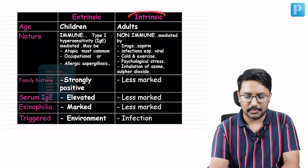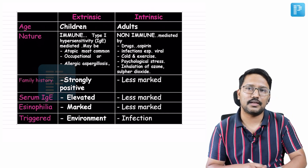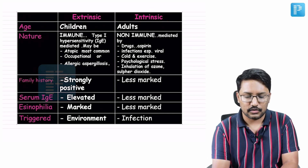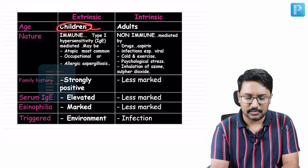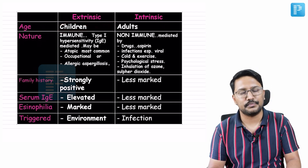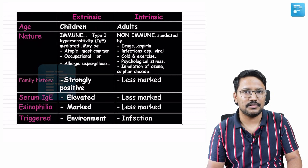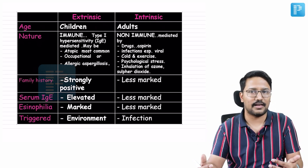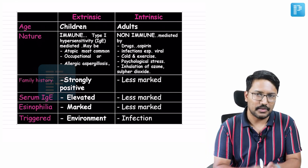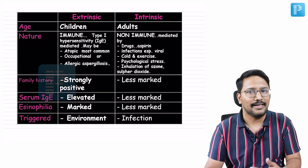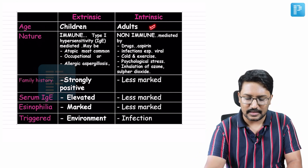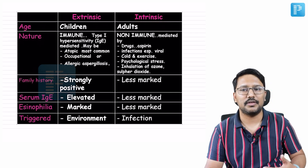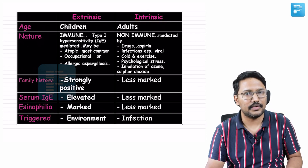The most important distinguishing point is age of onset. Extrinsic asthma typically begins in the pediatric age group, while intrinsic asthma usually begins in adulthood. Most adult asthma patients may have extrinsic asthma that carried forward from childhood — pediatricians note that most childhood asthma patients grow out of it by their teenage years, but some carry it into adulthood. If onset is during adulthood, it is likely intrinsic.